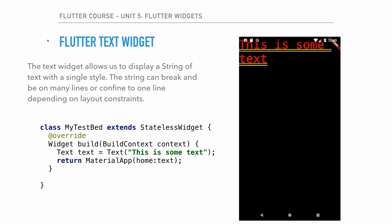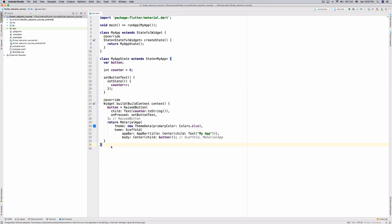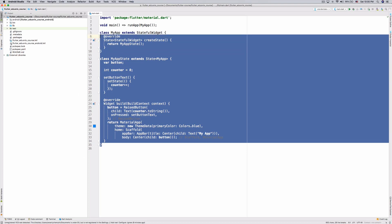Here we have sample code: a class MyTestBed extending StatelessWidget, we build the widget and return a new Text widget inside a MaterialApp. Very simple stuff, and we get the result showing 'this is some text.' Let's quickly go ahead and implement this in the code.